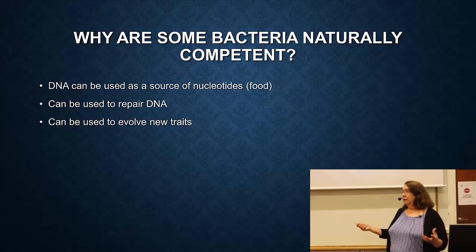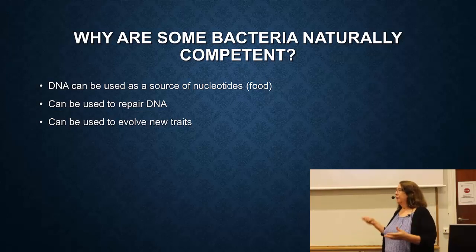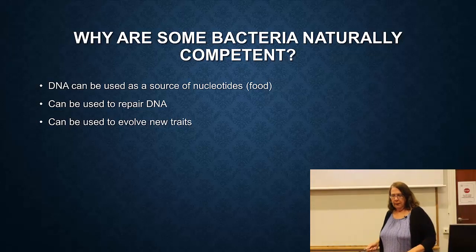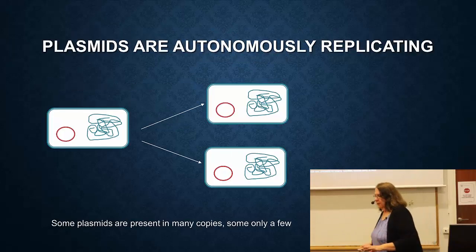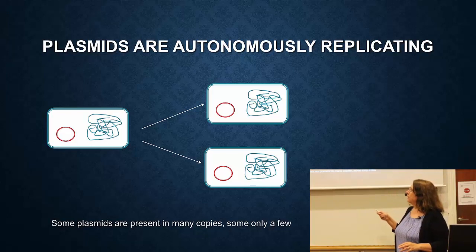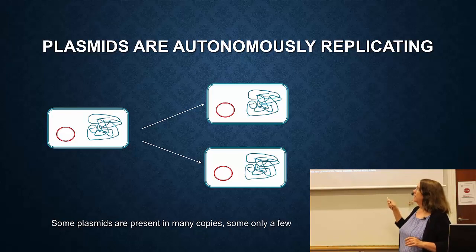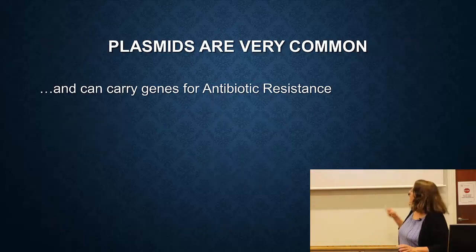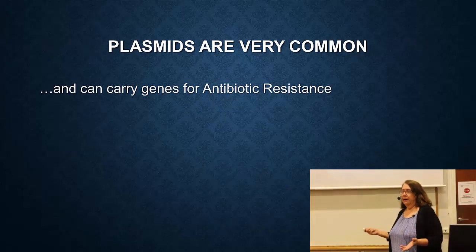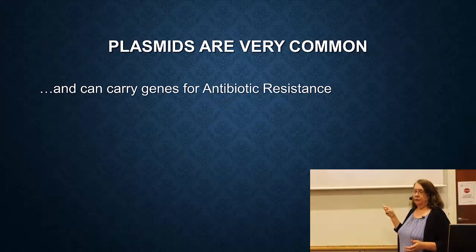A third reason is that you can evolve new traits. If you pick up a gene that is very useful and it's selected for, that will be kept — you evolve the ability to take up DNA as well as the new traits. That's the first way: transformation. Now, before moving to the second way, I want to talk more about plasmids. Plasmids are small circular DNA molecules — autonomously replicating, meaning they don't have to go into the chromosome. Every time the cell divides, it copies the plasmid too. Some plasmids exist in many copies, some in only one. Plasmids are incredibly common; most natural strains of bacteria have them, and they can carry genes for antibiotic resistance.